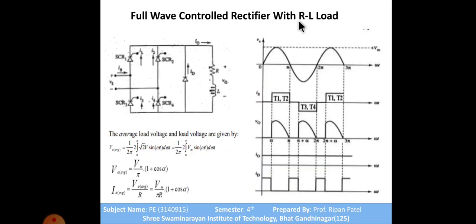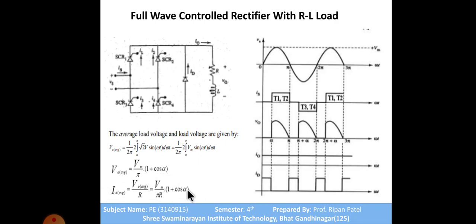To overcome the negative output due to RL load, we connect a freewheeling diode. When the output tends to go negative, the freewheeling diode conducts and the energy is dissipated through the freewheeling path instead of feeding back to the supply. This makes the output waveform the same as the resistive load case. The output voltage equation then becomes V_zero_average = Vm/π × (1 + cos α), same as the resistive load equation.